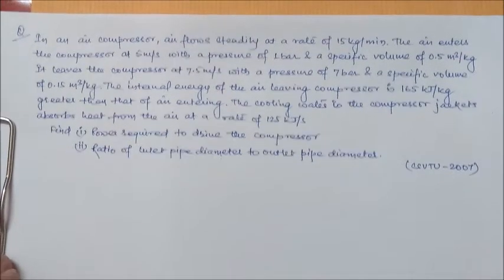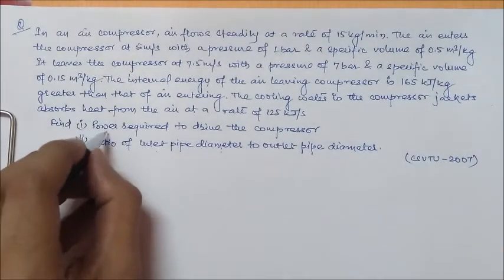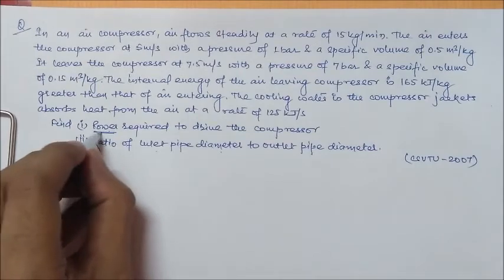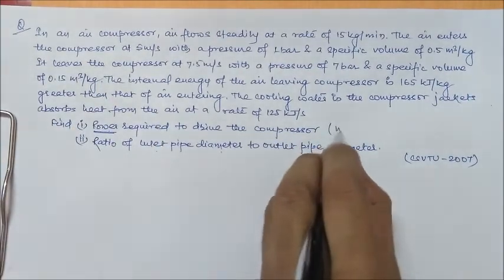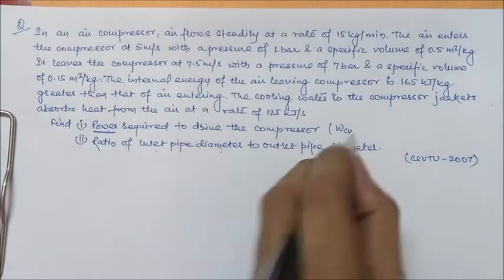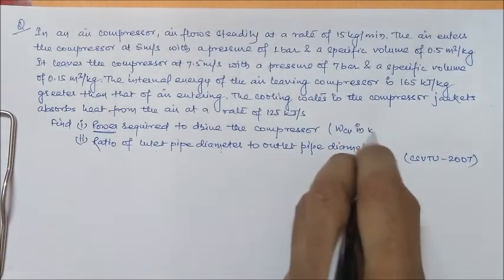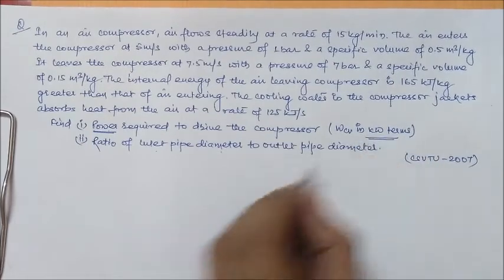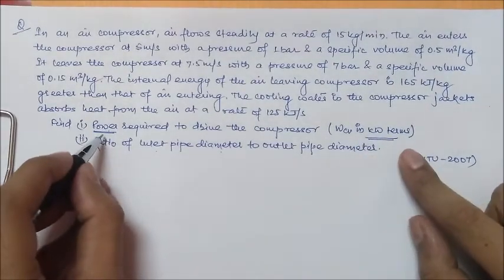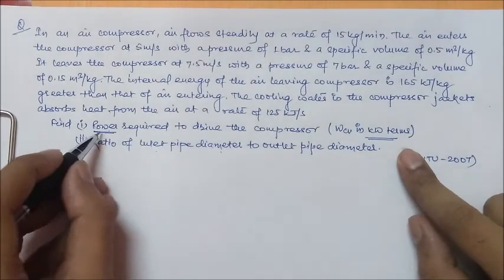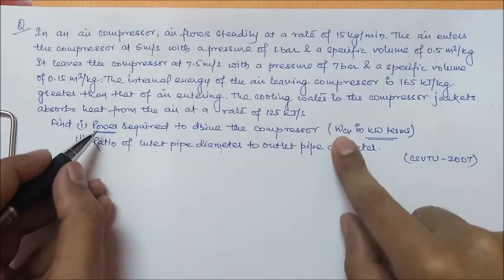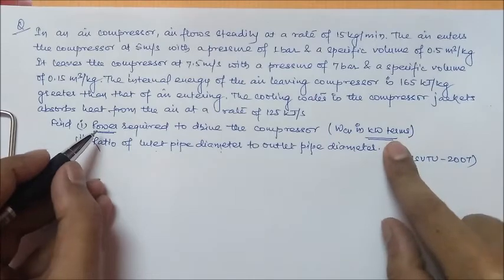So let's start. First, you should know that when the question asks you to find out the power required, it wants your WCV. That means it's indirectly asking you what is the work done by the control volume in kW terms.